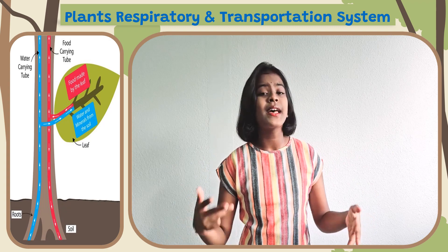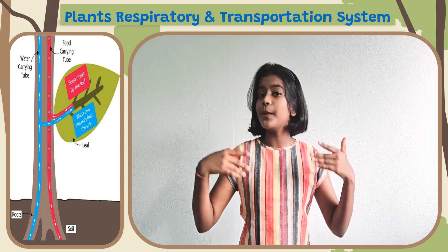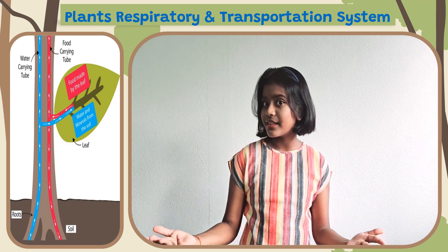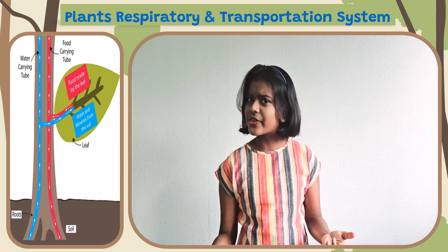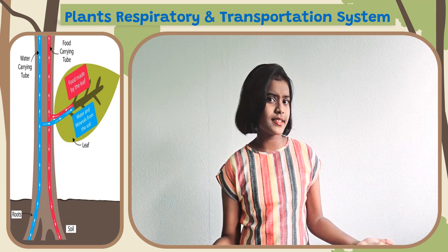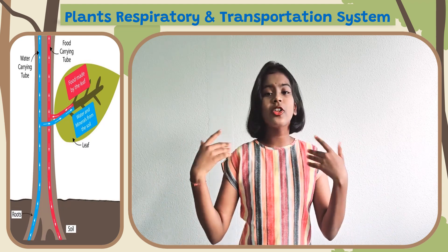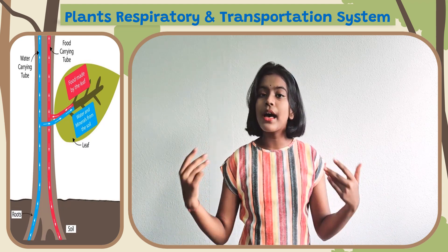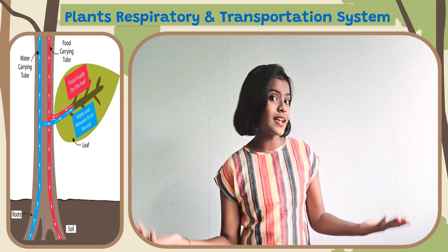The leaves make food for the plant. The leaves are green because of chloroplast. Chloroplast is part of a plant cell.